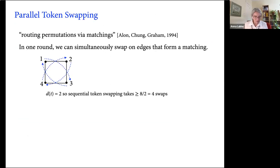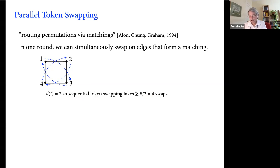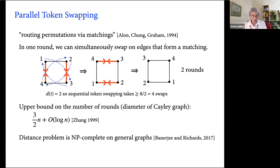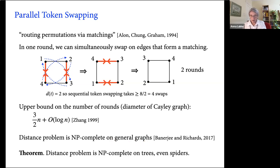Switching to parallel token swapping: in one round you can swap simultaneously on any matching. In a simple 4-cycle example, every token wants to move distance 2, requiring at least 4 sequential swaps but achievable in just 2 rounds. An improved upper bound of 3n/2 + O(log n) rounds is known. The parallel distance problem is NP-complete on general graphs, and we showed it is NP-complete even on trees — specifically spiders.